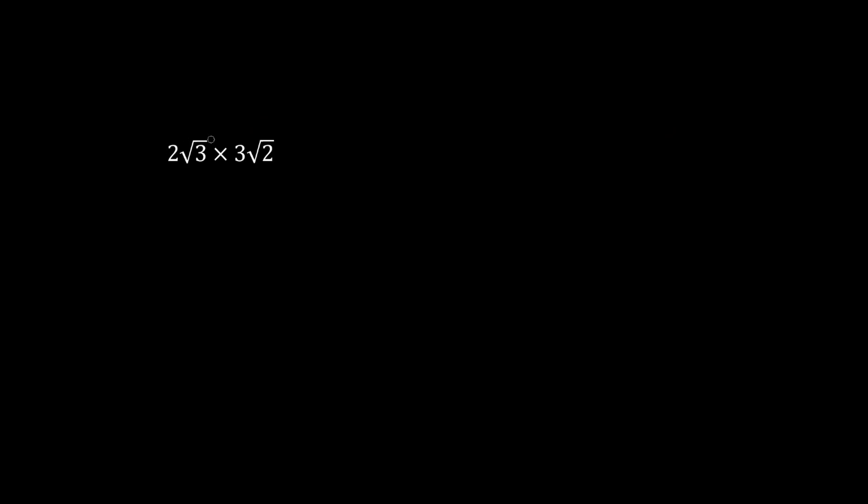What is 2 root 3 times 3 root 2? We're allowed to multiply these numbers. 2 times 3 is 6. And what is root 3 times root 2? We're allowed to multiply the insides. 3 times 2 is 6. So the final answer is 6 root 6.